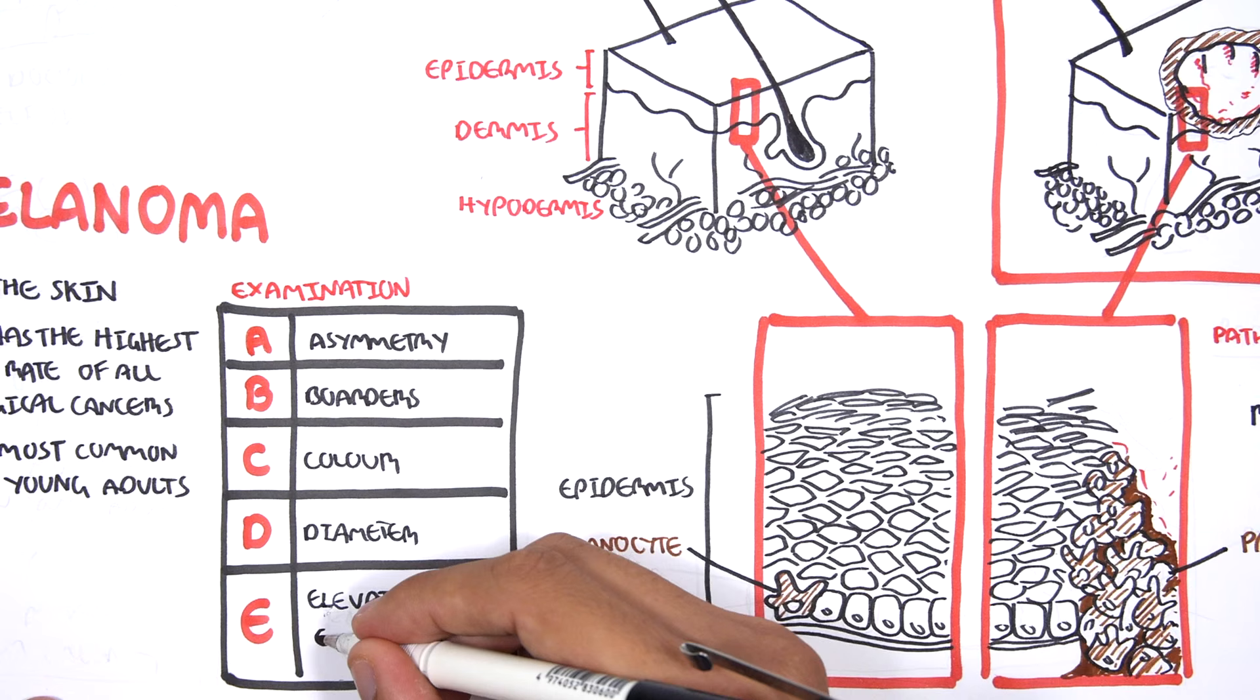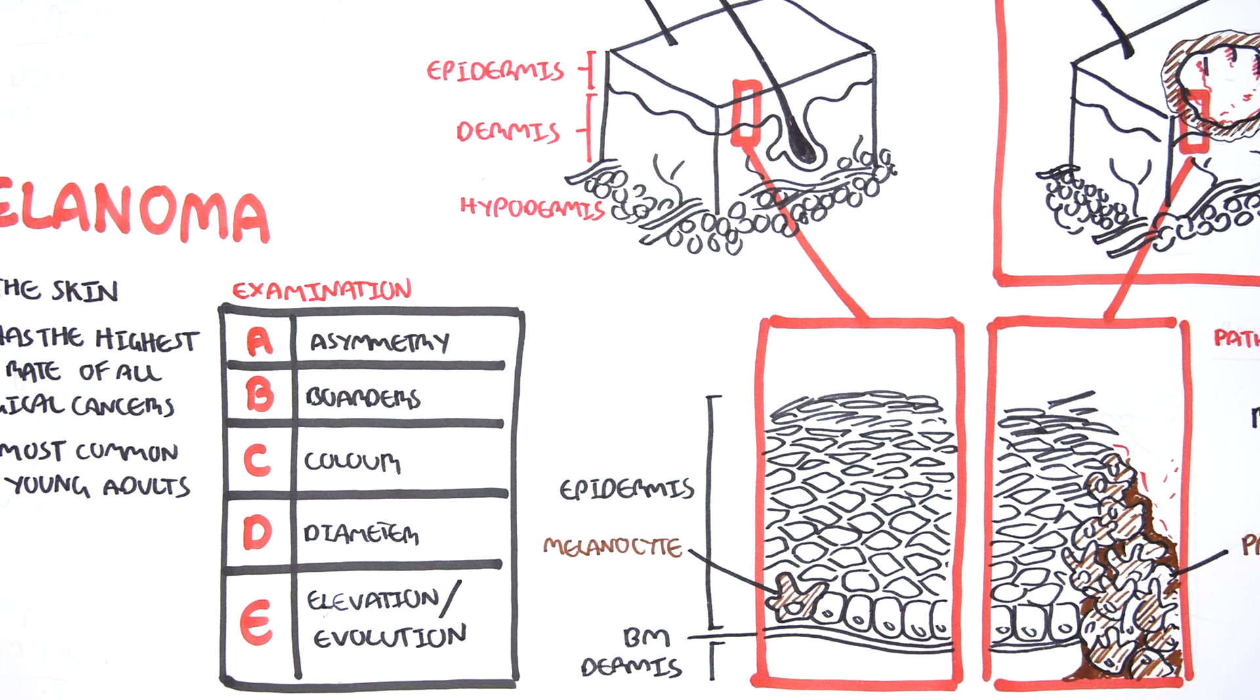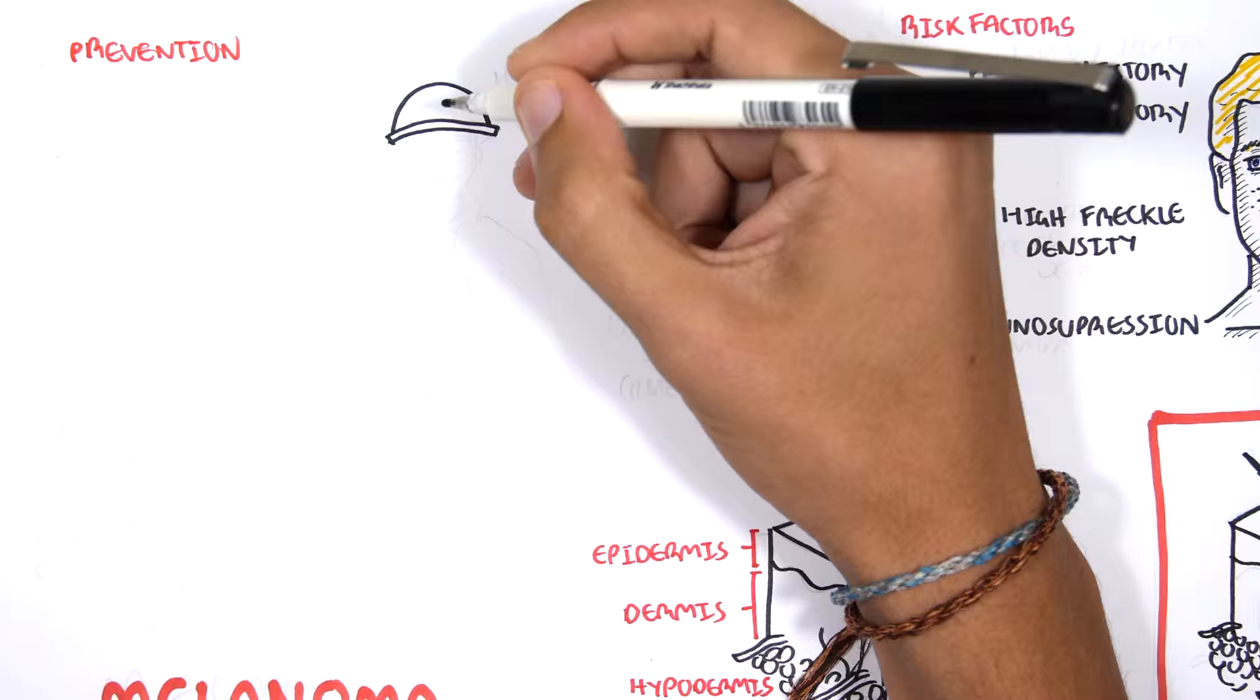And E, possibly the most important, is we look at elevation and in particular evolution. So if the skin lesion changes quickly or rapidly in a short duration, melanoma is suspected.